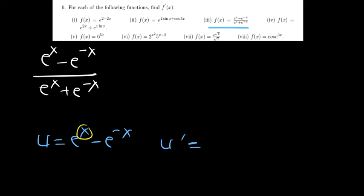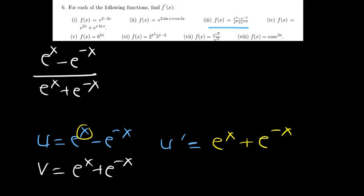Now we apply the quotient rule to (e^x minus e^(-x)) divided by (e^x plus e^(-x)). Let u equal the numerator: e^x minus e^(-x). Differentiating, u prime equals e^x plus e^(-x), since the derivative of negative x is negative one, which makes the negative sign positive. Let v equal the denominator: e^x plus e^(-x), and v prime equals e^x minus e^(-x).